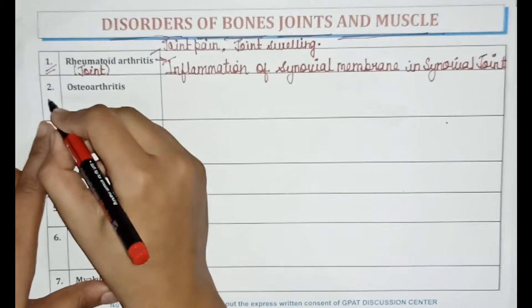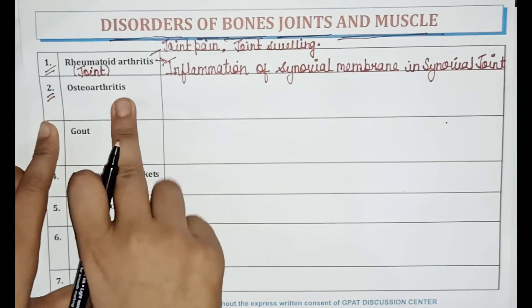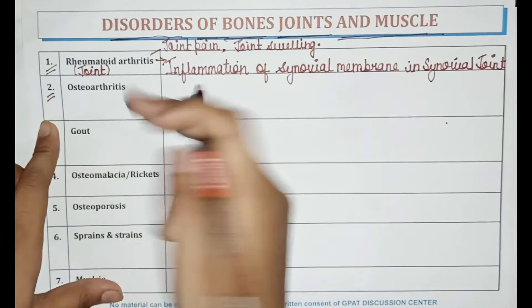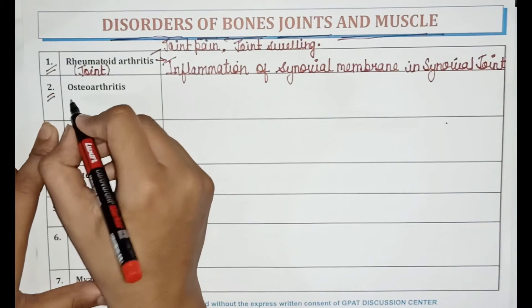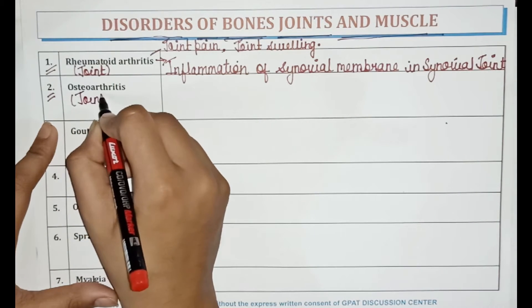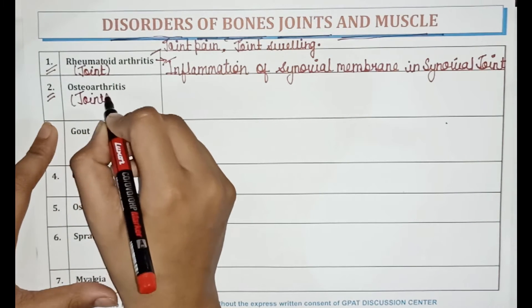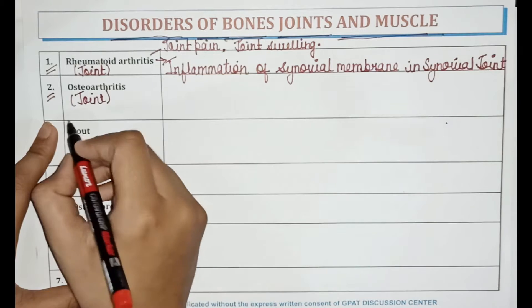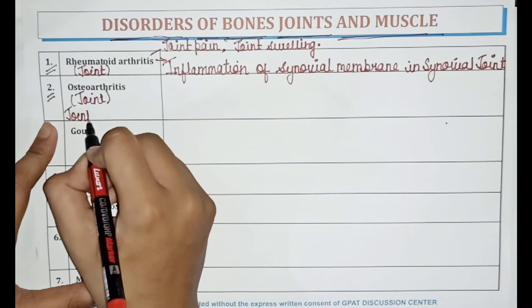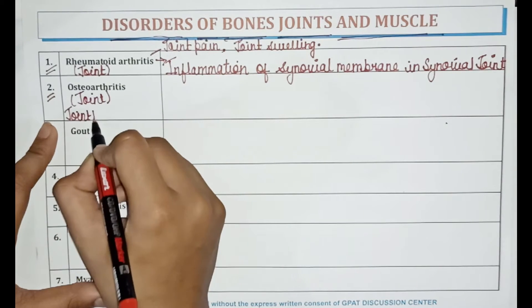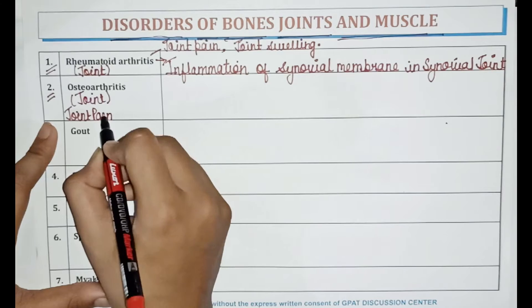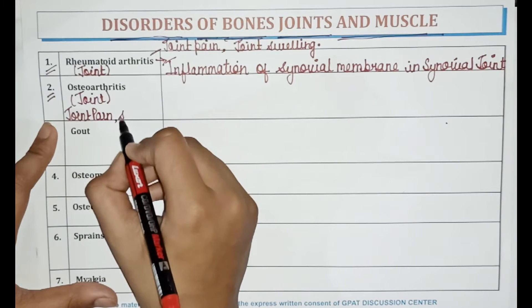The second one is osteoarthritis. It is also a joint disorder and its symptoms are joint pain and stiffness.